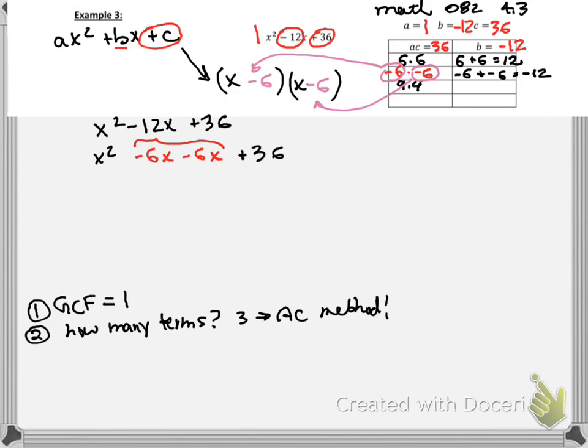So now we have four terms. So we're going to use factoring by grouping. Now remember, when you have factoring by grouping and you have a negative sign right here, you have to artificially insert a plus sign in the middle. And then just sort of scoot that negative sign over a little bit so that you can group your terms without changing the signs of any other terms.